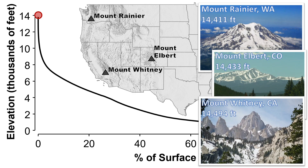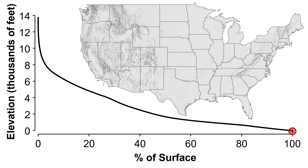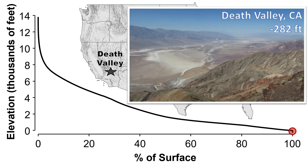This plot doesn't show such high elevations because of the relatively coarse digital elevation model used to create it. It was fine enough, however, to show this interesting low elevation kink, which is associated with Death Valley, California, where there is a relatively large valley bottom area falling well below sea level.